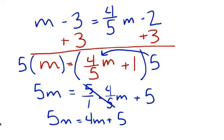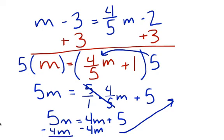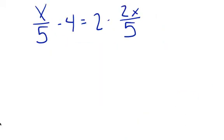From here, you know that you can subtract 4m on this side. 5m minus 4m is m. These cancel out to give you 0, and now I am just left with 5. So m equals 5. Let's go on to one more.